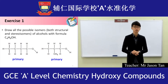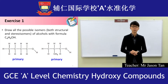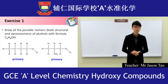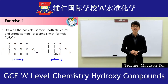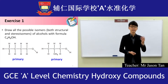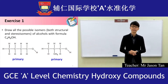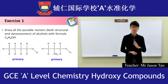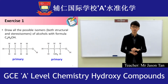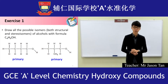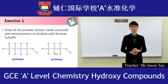In this question, draw all possible isomers — both structural and stereoisomers — of alcohols with formula C₄H₉OH. In the diagram shown, there are two primary alcohols. If you look at the carbon that is connected to the OH group, surrounding that carbon there are two hydrogens and one alkyl group. Alkyl group is also known as R group. Since there is only one R group, this is a primary alcohol.